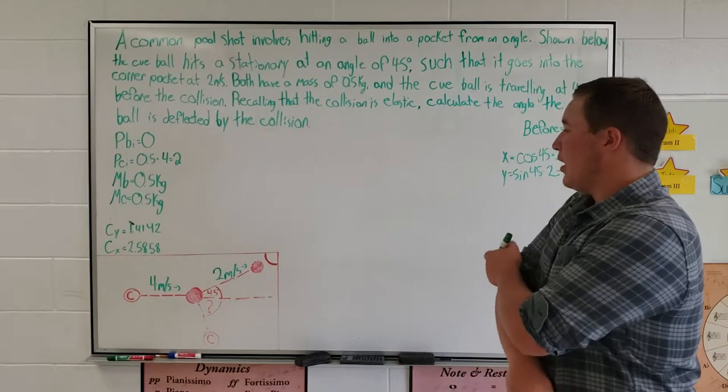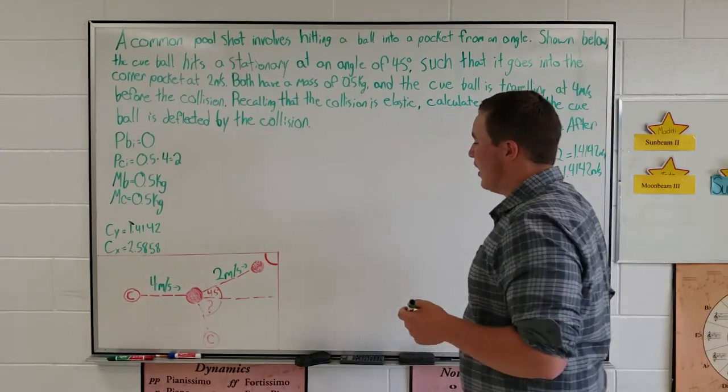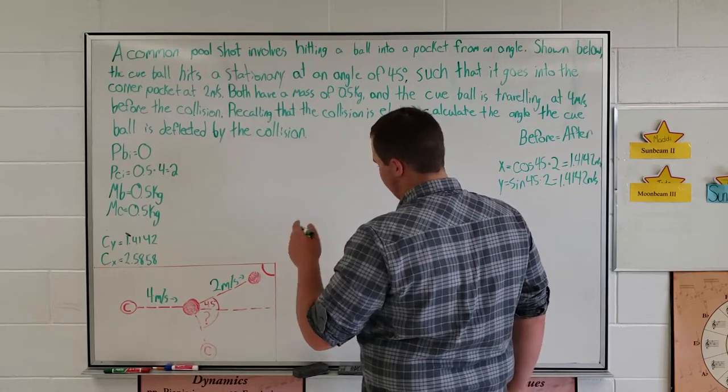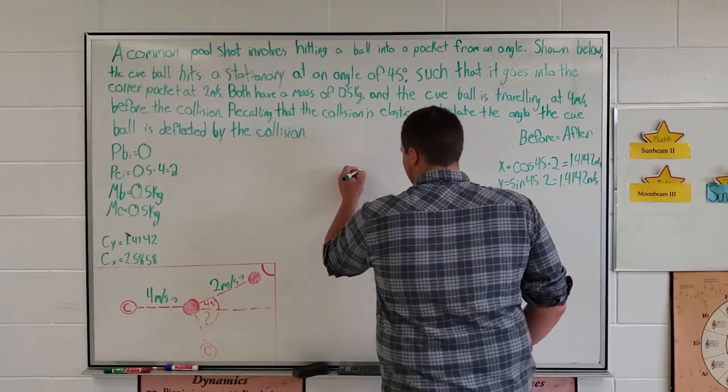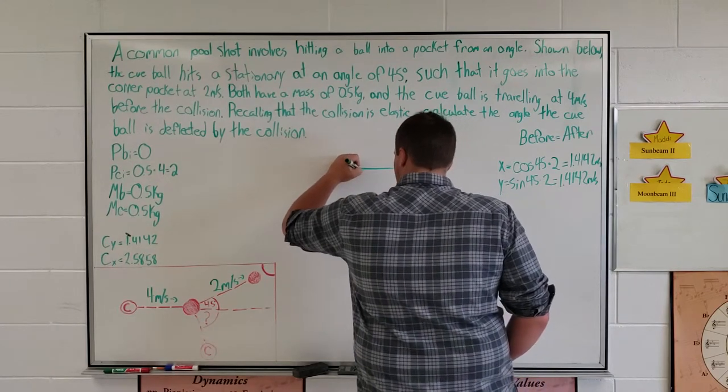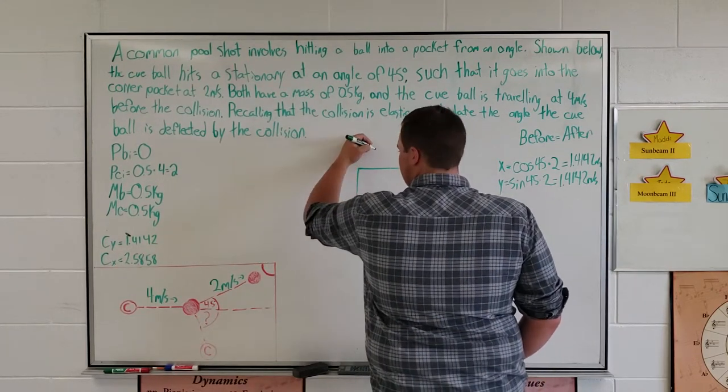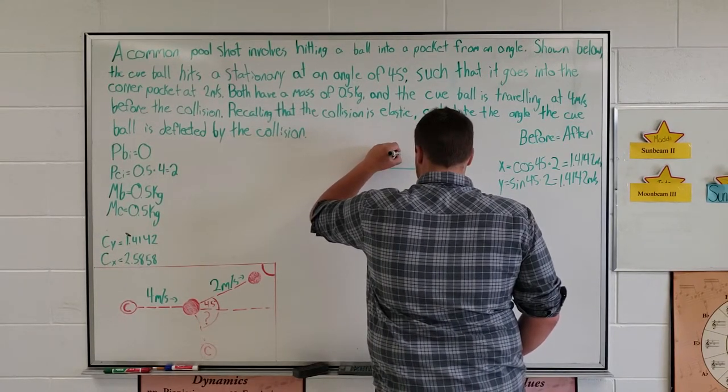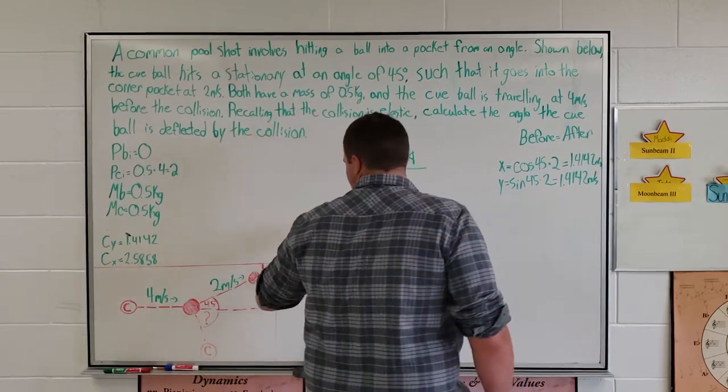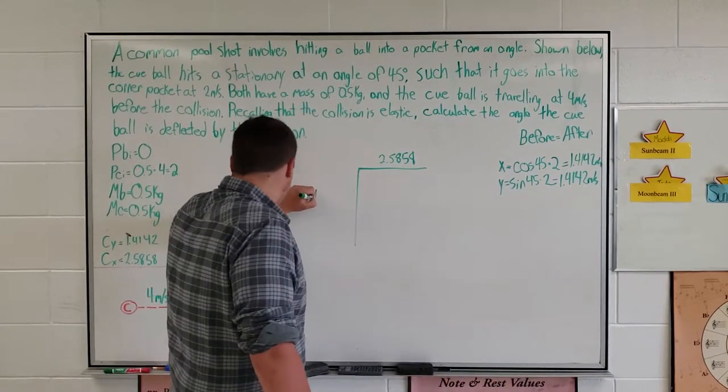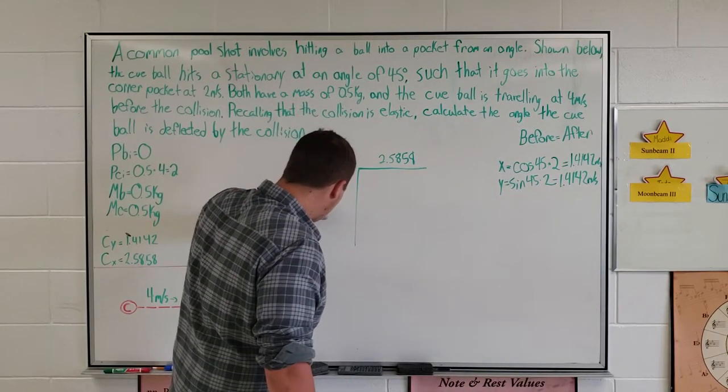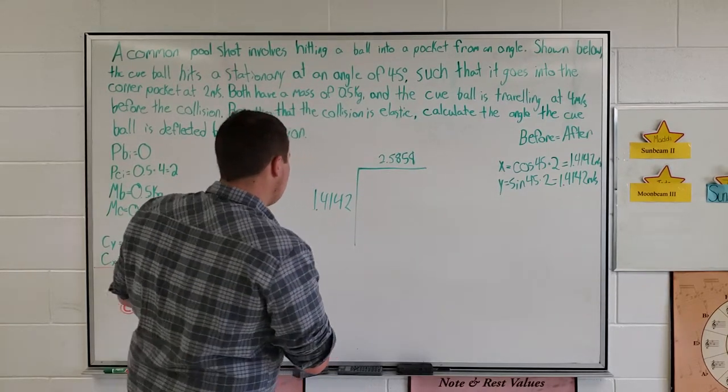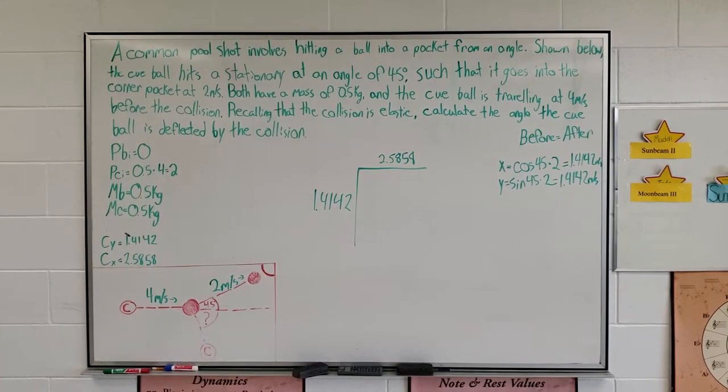Now we know both the x and y components of our cue ball after the collision. Our x is east and our y is south. So x equals 2.5858 and y equals 1.4142. Now with these two values, we'll use tan inverse to find our missing angle.